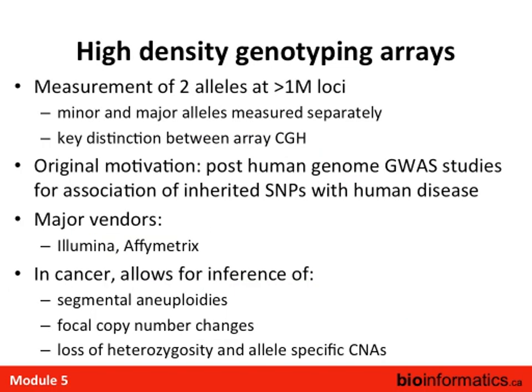Moving on to high-density genotyping arrays: these measure two alleles at specific loci in the genome known to be variant in the human population. These loci were discovered by projects like the HapMap Project or the Thousand Genomes Project, targeted at discovering loci frequently variant in the general human population. About a million such loci are measured across the genome. The major allele — most frequent — and the minor allele — less frequent — are measured separately and independently. This is the key distinction between this technology and array CGH: array CGH gives one measurement per locus; SNP genotyping arrays give two.